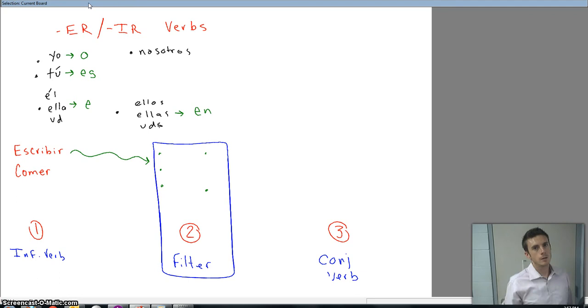Now, for nosotros. If it is an ER verb, our ending is EMOS. If it is an IR verb, our ending is IMOS. The pronunciation is really a key there, EMOS, IMOS.